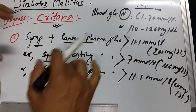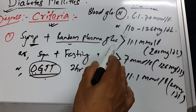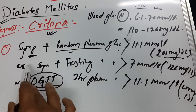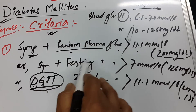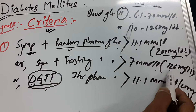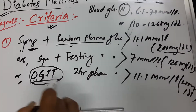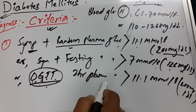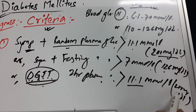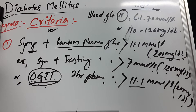To summarize, the three main criteria are: first, symptoms plus random plasma glucose more than 11.1 mmol/L or 200 mg/dL; second, symptoms plus fasting plasma glucose more than 7 mmol/L or 126 mg/dL; third, OGTT two-hour plasma glucose more than 11.1 mmol/L or 200 mg/dL.